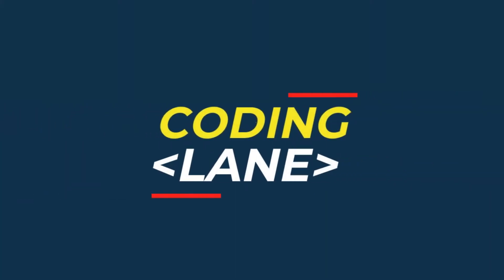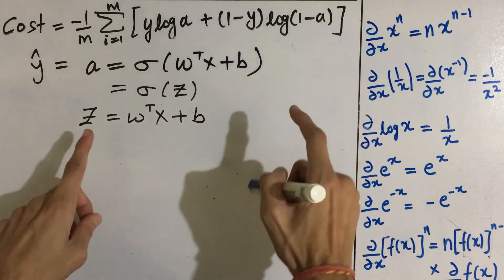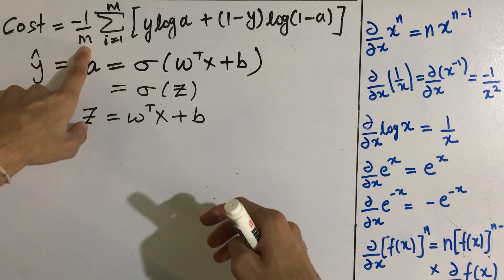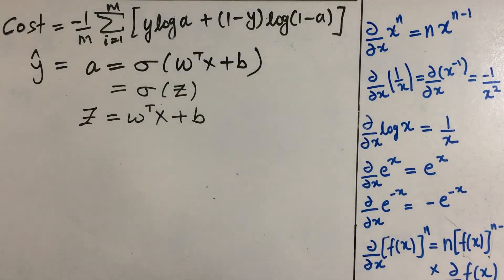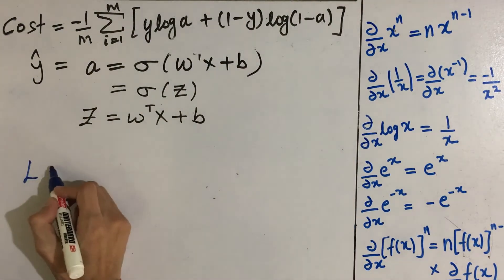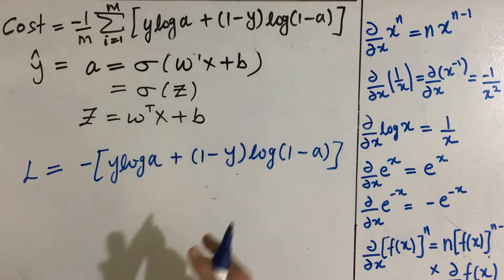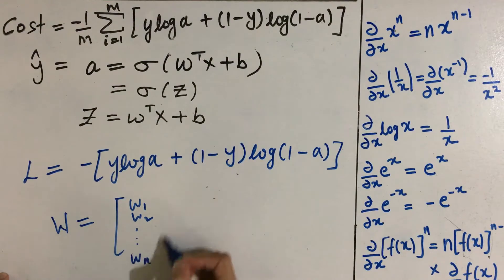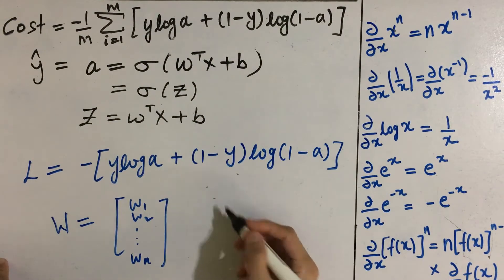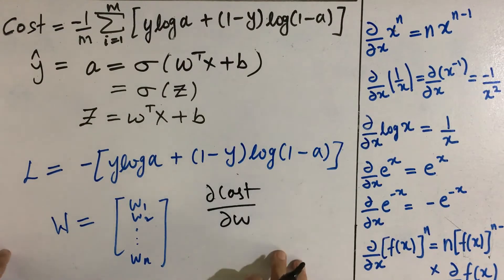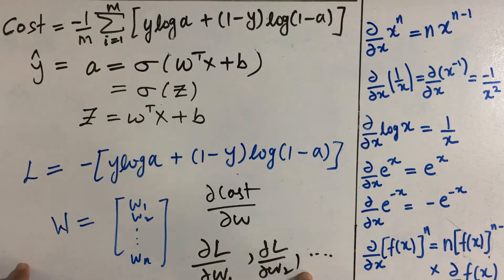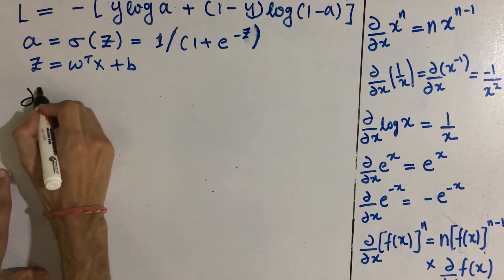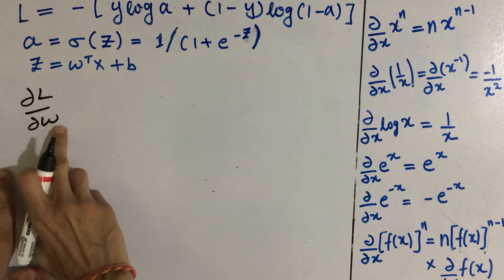This term here will represent the error for one observation. If our dataset has m number of observations, then the cost function will be the average of all these errors. We can write this error as loss. Also, w can be a matrix of many parameters w1, w2, up to wn, and b will be just a single parameter. For finding del cost by del w, we can first find del l by del w1, then del l by del w2, and from there compute del cost by del w. For simplicity, I am writing w1 as w for now.